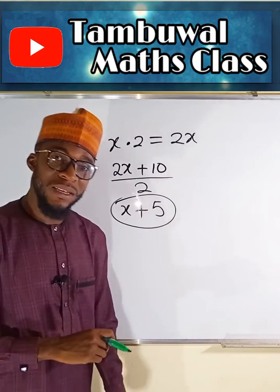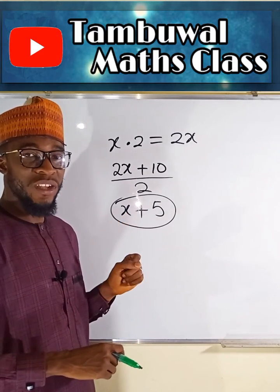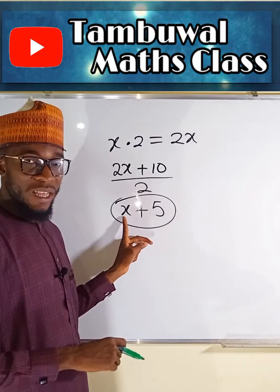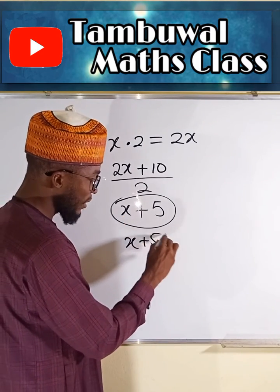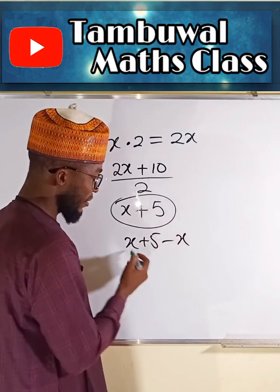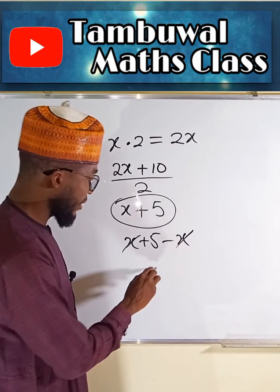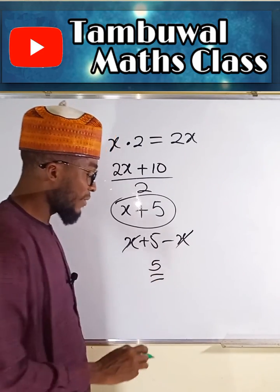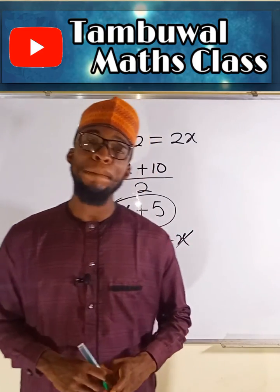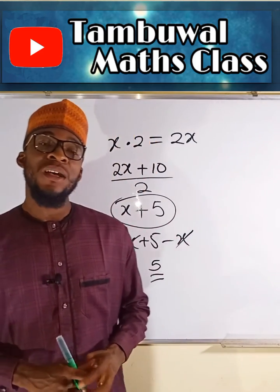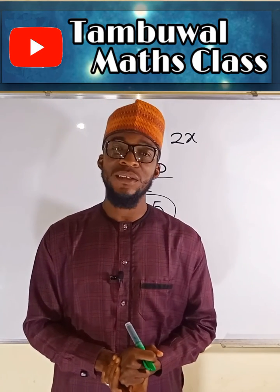Lastly, the math teacher said you should subtract the number you have chosen initially. For me I know I have chosen X, so from X + 5 I will subtract X. Definitely I will be left with only 5, and hence the result is 5. So this is just the logic behind it — there is nothing like magic here. And this is all I have for you today. Thank you for watching, do have a nice day.